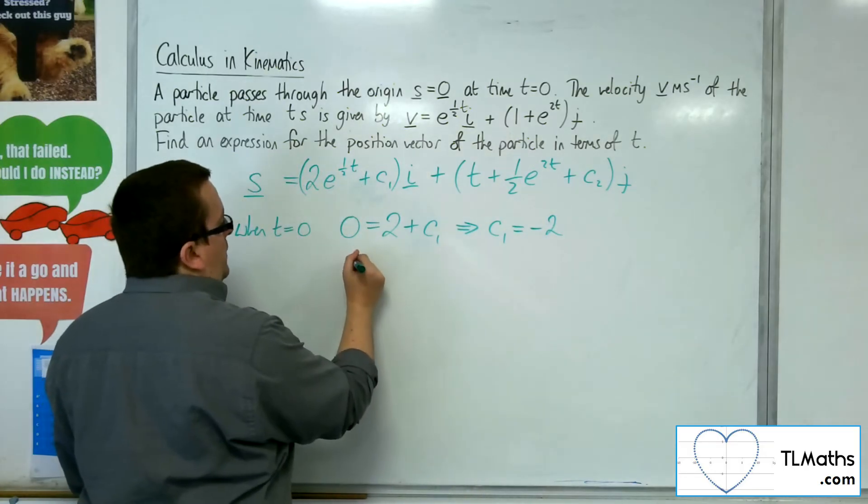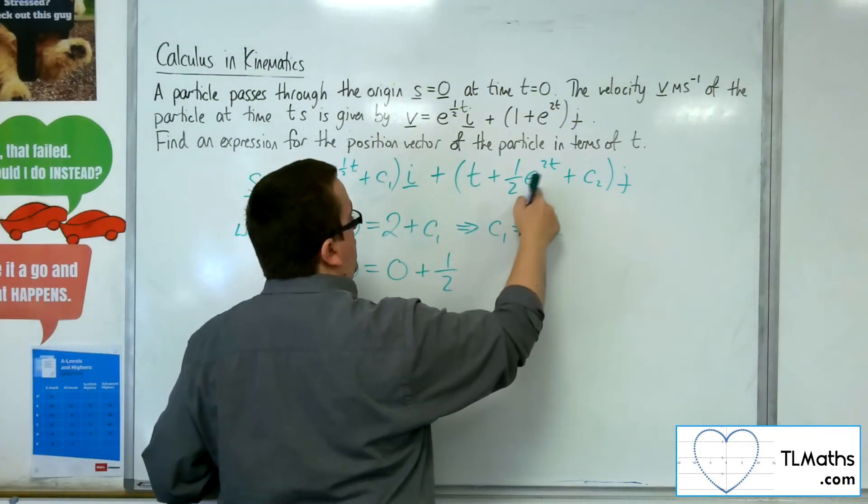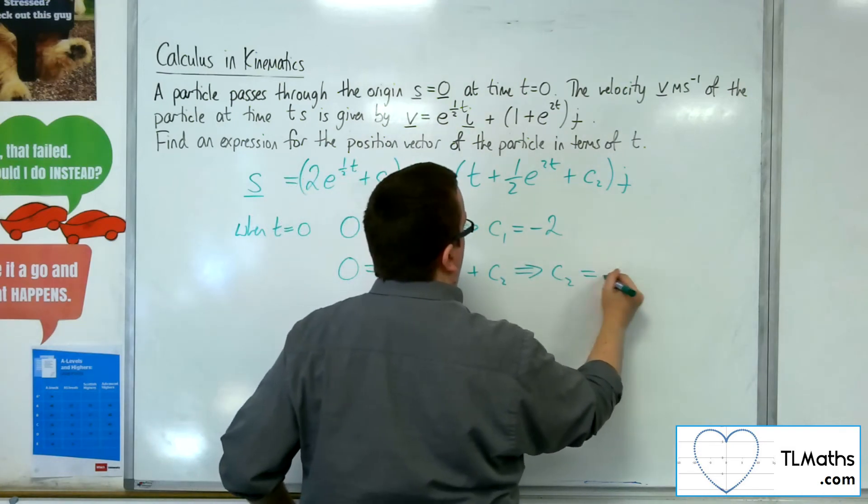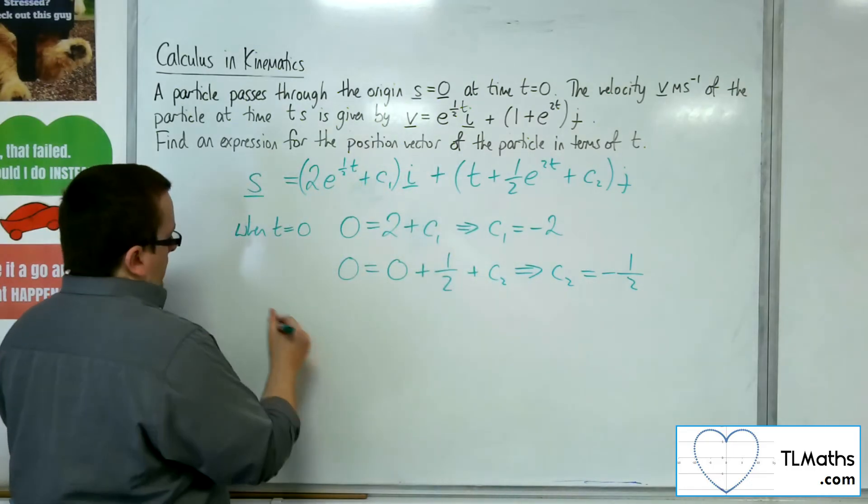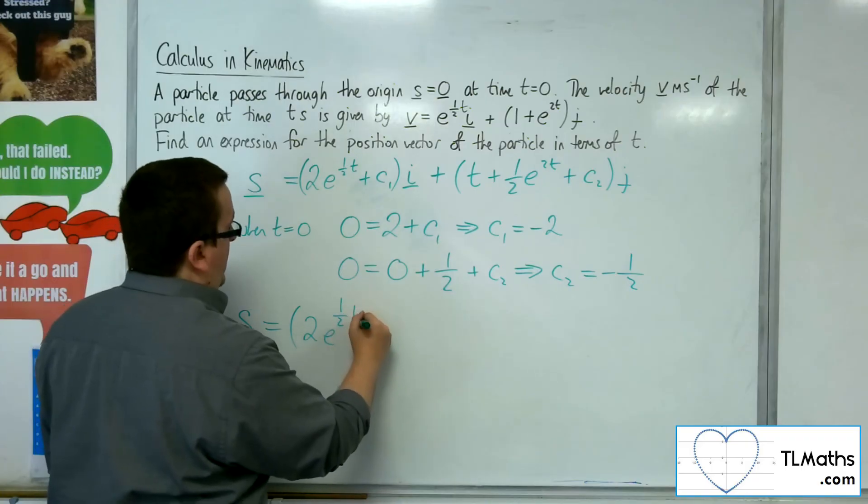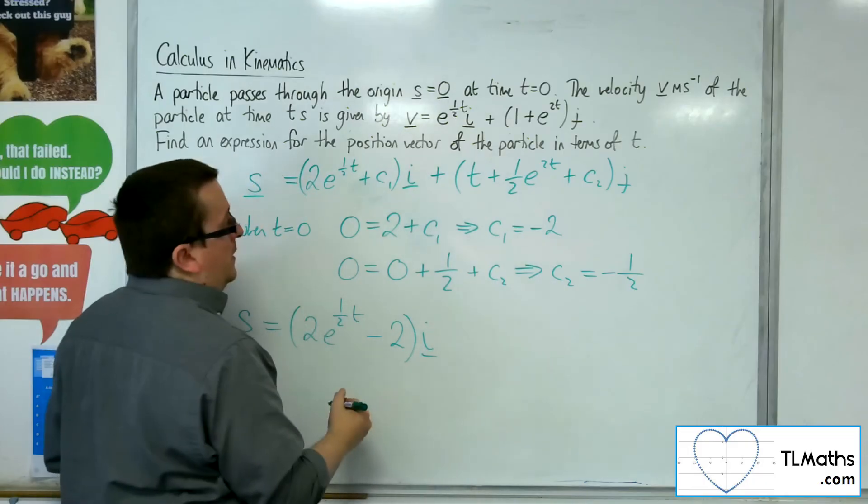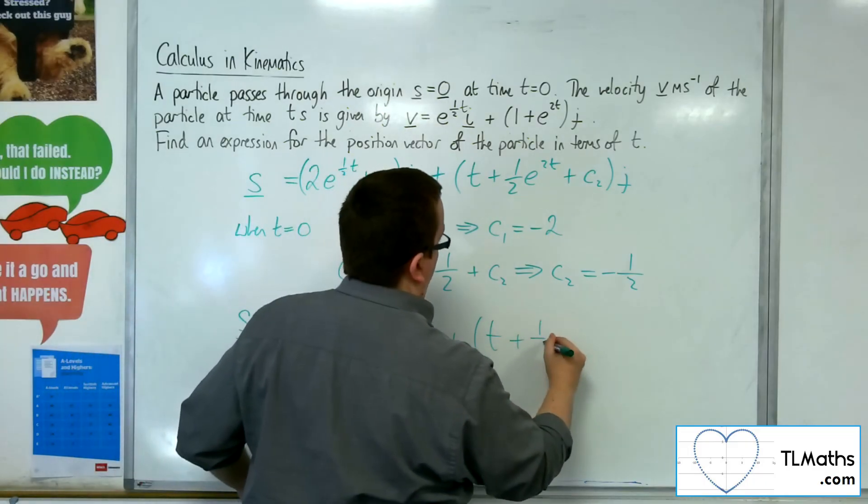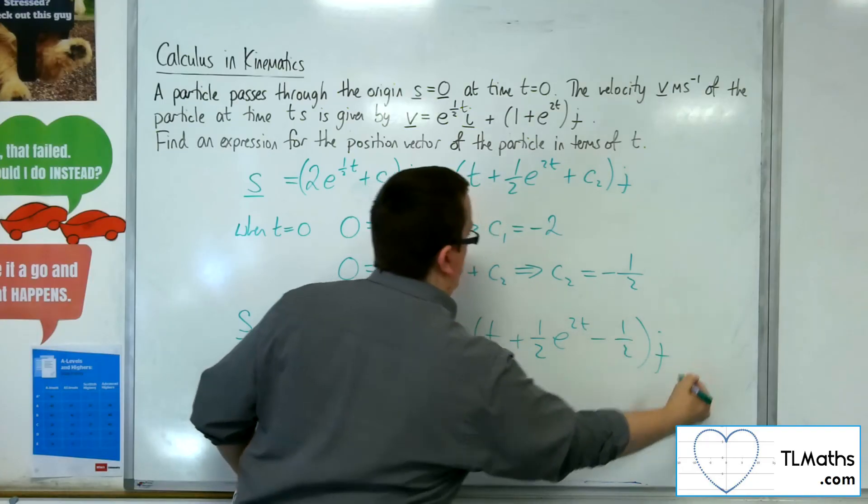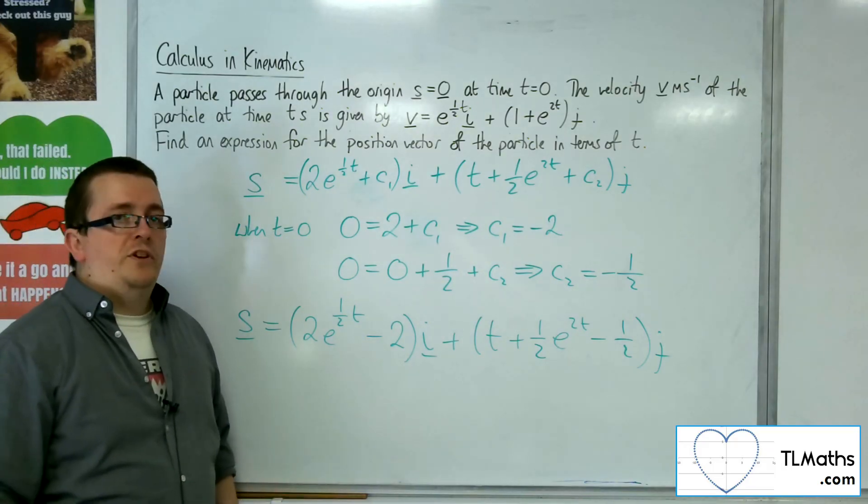And also 0 is equal to 0 plus 1 half e to the 0, which is 1, plus c2. And so c2 must be minus a half. So s is equal to 2e to the half t take away 2 i, plus t plus a half e to the 2t minus a half j. So there is my position vector for the particle in terms of t.